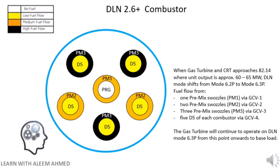As mentioned at the start of the video, these DLN mode changeover details are based on the actual tuning of one GE 7FA gas turbine, and therefore the settings can vary based on model and tuning; however the concept remains the same. If you liked this video, please like, comment and subscribe. If you want a similar explanation on other topics, please write in the comments so that I will add that topic to my priority list. Thank you.